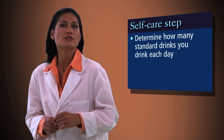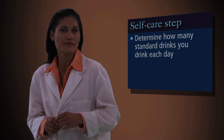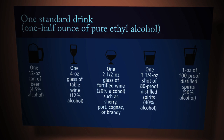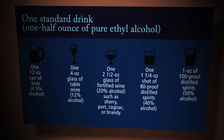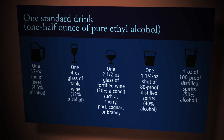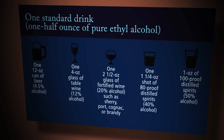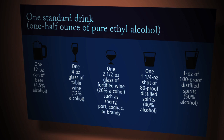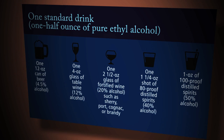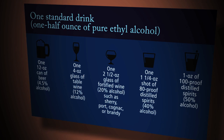One half ounce is the amount of alcohol contained in each of the following: one 12-ounce can of beer; one 4-ounce glass of table wine; one 2.5-ounce glass of fortified wine such as sherry, port, cognac, or brandy; one and a quarter ounces of 80-proof distilled spirits; or one ounce of 100-proof distilled spirits.